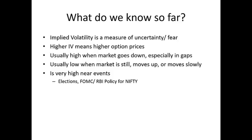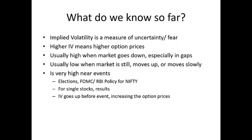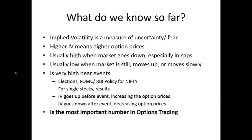All the indices become volatile around major events. For single stocks, it's obviously the big ones — the results. IV goes up before events, which increases option prices, and IV goes down after an event when the uncertainty is over, which decreases option prices. Implied volatility is the single most important number in options trading. A lot of people lose money because they don't understand IV, or worse, didn't even know it existed.